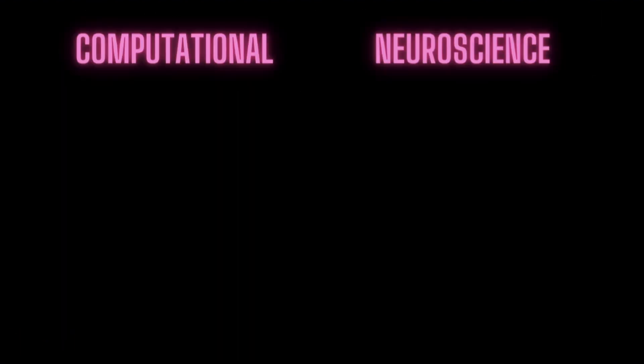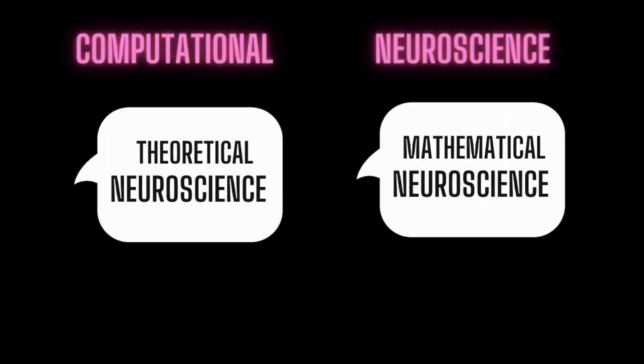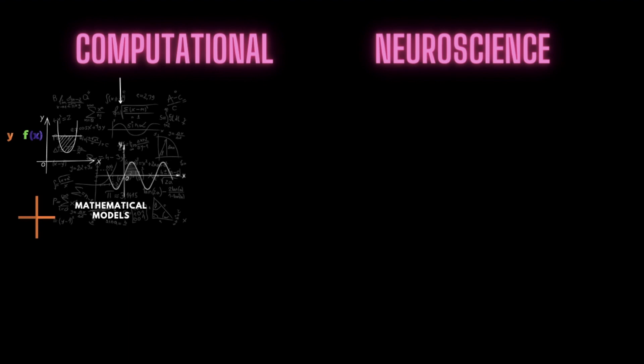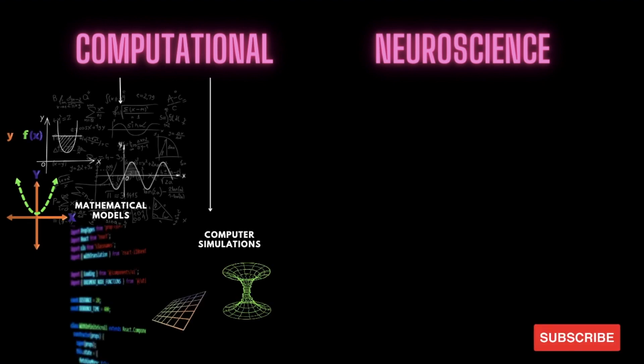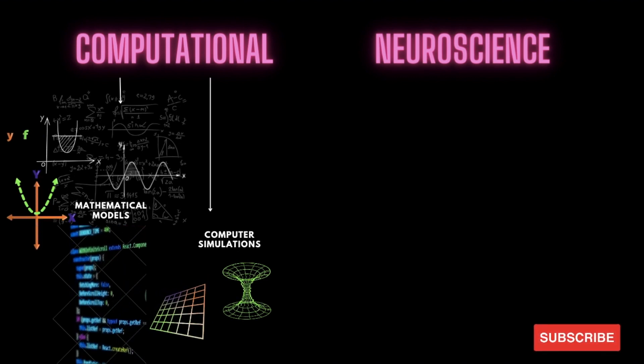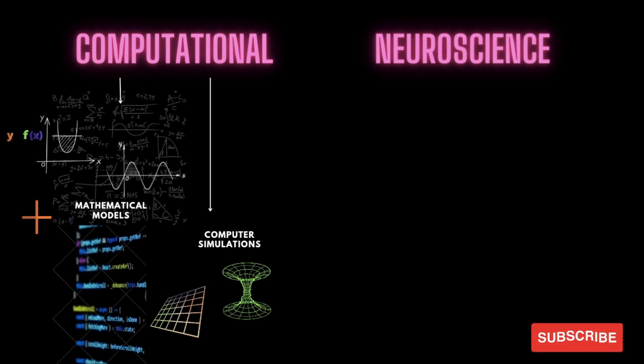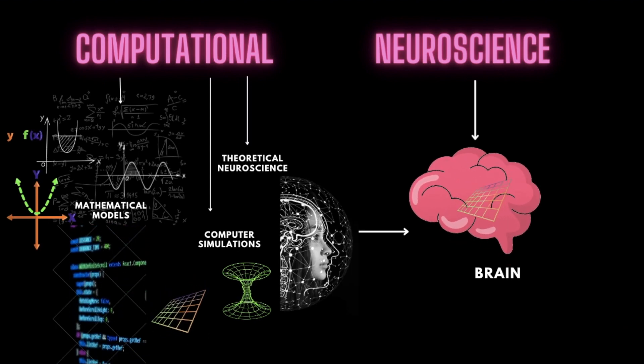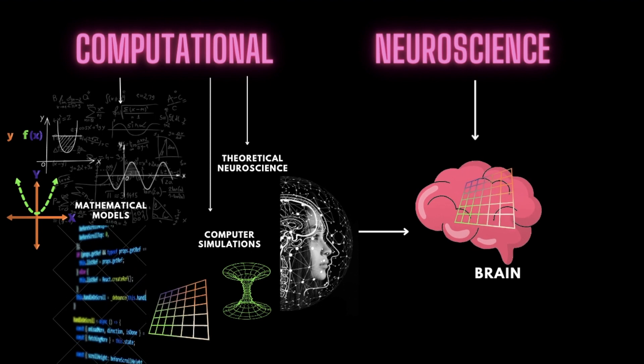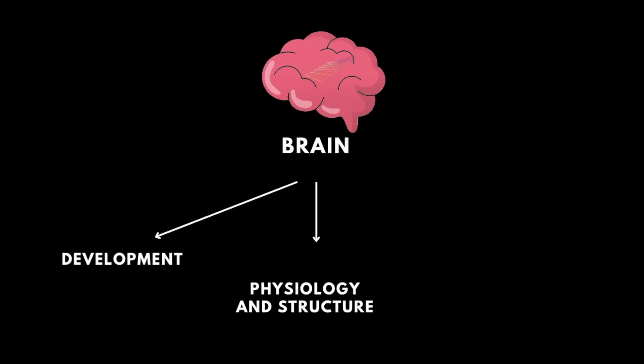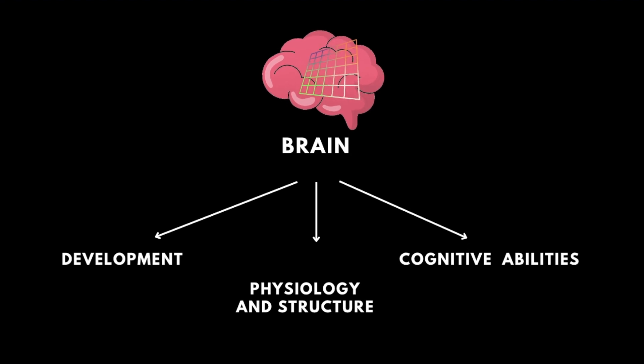Computational neuroscience, also referred to as theoretical or mathematical neuroscience, is a branch of neuroscience employing mathematical models as approximations of cognitive functioning and neural mechanisms and therefore it focuses a lot of its attention on the development and evaluation of these mathematical models. Furthermore, the field simulates these models using computer simulations and uses theoretical analysis and abstractions of the brain to understand the principles governing the development, structure, physiology and cognitive abilities of the nervous system.